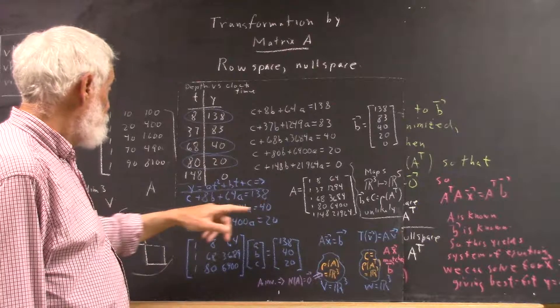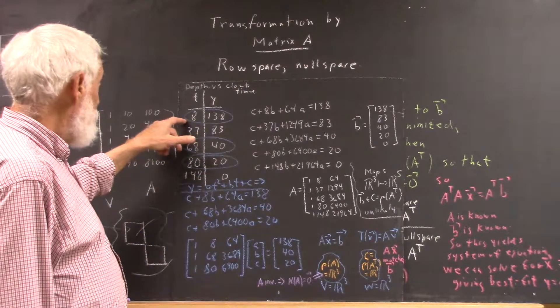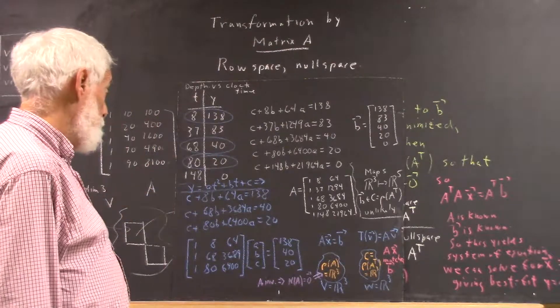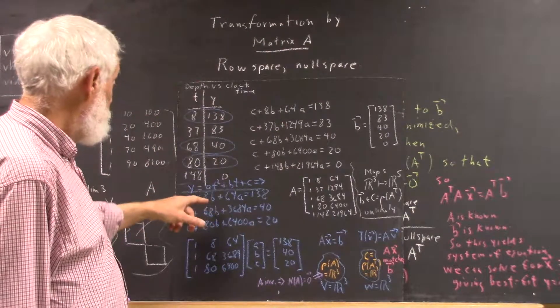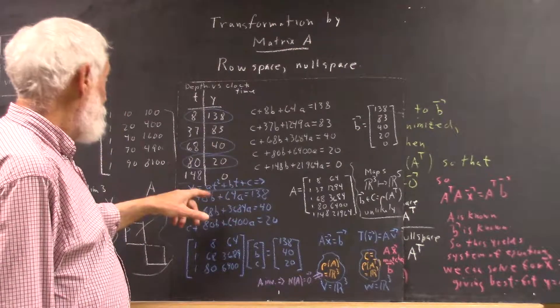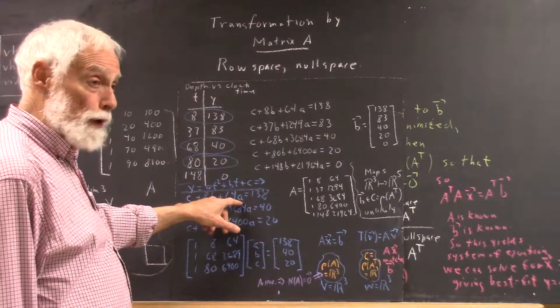So the y is 138, I plug in 8 for t. Well, c doesn't have a t dependence, so c is just c. bt is 8b because t is 8, b times 8, and at squared is 64a.